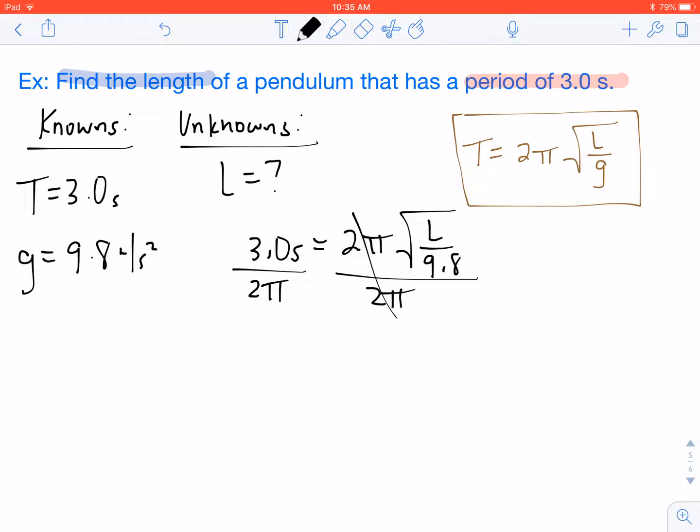And when you divide by 2 pi with your calculator, make sure you put it in parentheses, or else it could throw off the order of operations. So 3.0 divided by 2 times pi gives us 0.48. So 0.48 now equals the square root of L over 9.8.